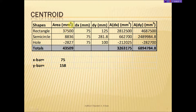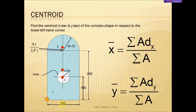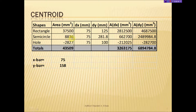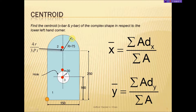Calculating the area of the rectangle: 150 times 250 gives 37,500. For the semicircle, the area is πr² divided by 2 — the semicircle is half a circle, so take πr² and divide by 2, which gives 8,836. For the circle (the hole), the area is πr², with r equal to 30.